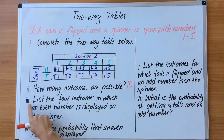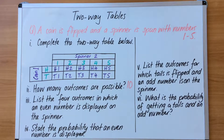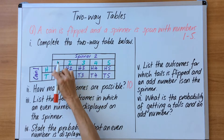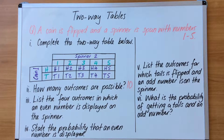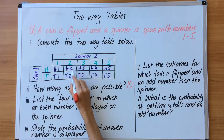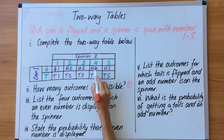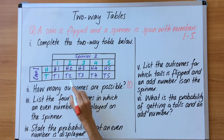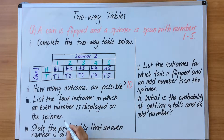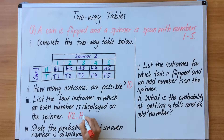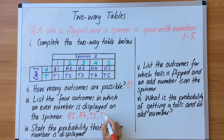Question three says: list the four outcomes in which an even number is displayed on the spinner. We're looking for even numbers, so we have H2, H4, T2, and T4. We simply write those down: H2, H4, T2, T4.